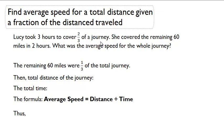The remaining 60 miles were one-third of the journey. Then we can figure out the total distance of the journey. The total distance had to have been 60 divided by one-third, which is the same as 60 times 3, which is 180 miles.